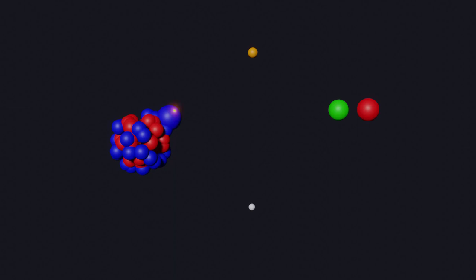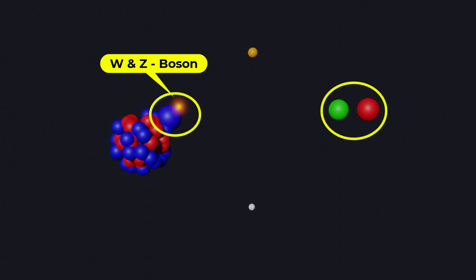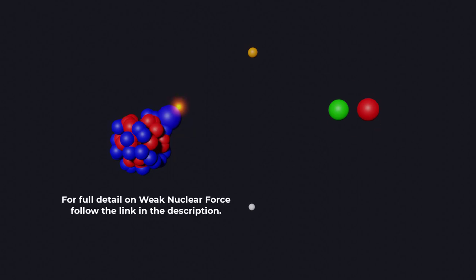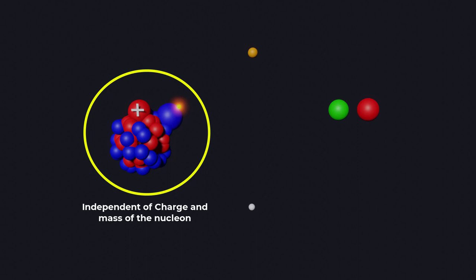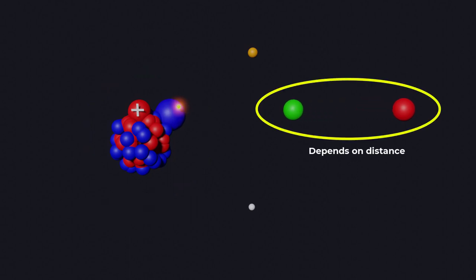This force is produced by the exchange of particles called W and Z bosons between quarks inside individual nucleons. Therefore, it is even shorter range than the strong force, it is independent of charge or mass, and depends only on the distance.